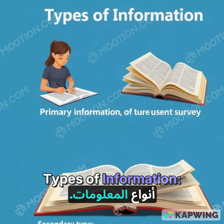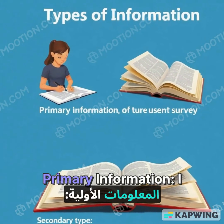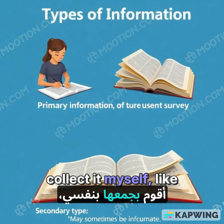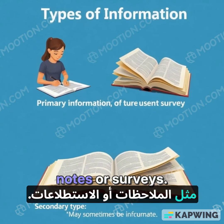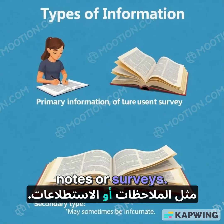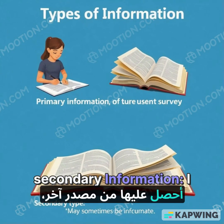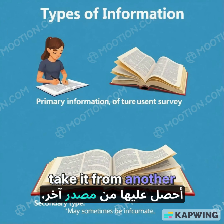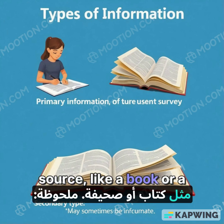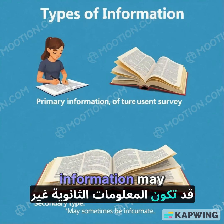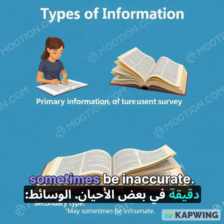Types of Information. Primary Information: I collect it myself, like notes or surveys. Secondary Information: I take it from another source, like a book or a newspaper. Note: secondary information may sometimes be inaccurate.